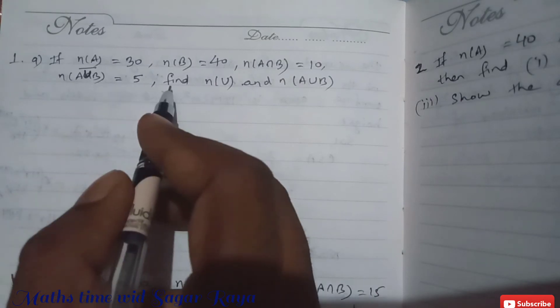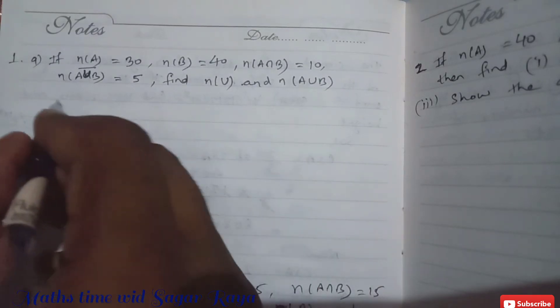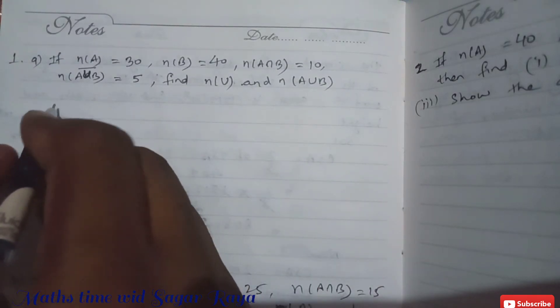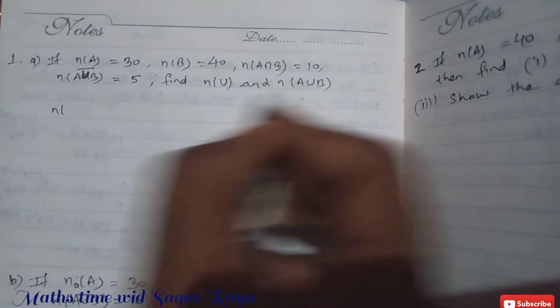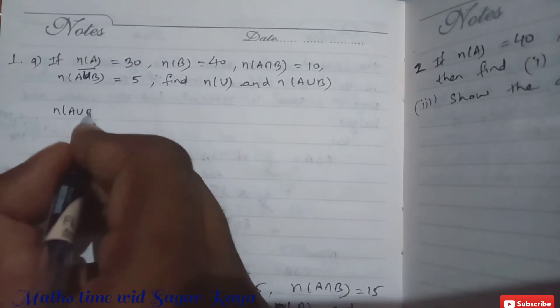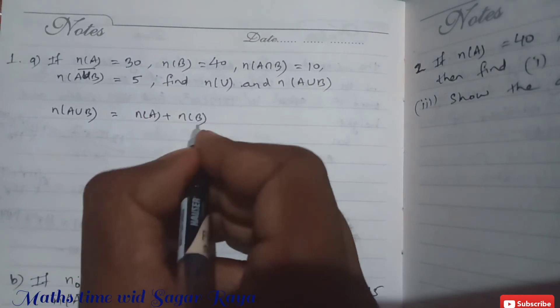So to find, let's find first of all n(A∪B). The formula for n(A∪B) is n(A) + n(B) - n(A∩B).